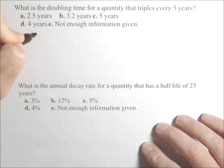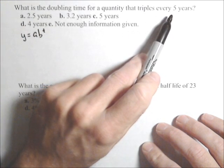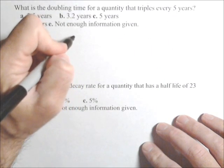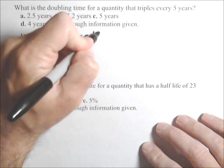We know that exponential functions have the form y equals a b to the t. Now, what we want is we want to set up a model for something that triples every five years. So, y equals a, now we want it to triple.